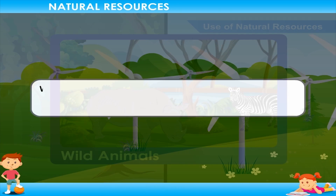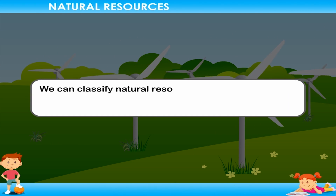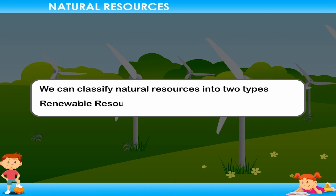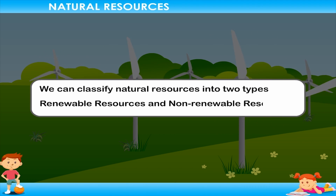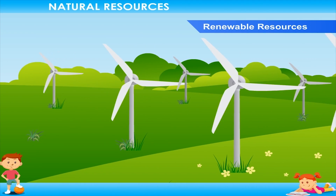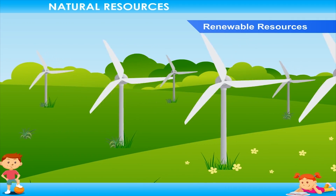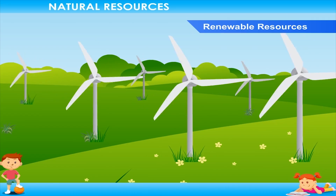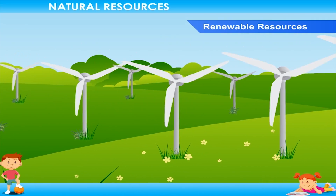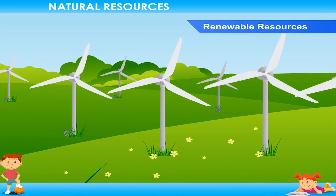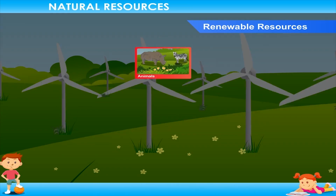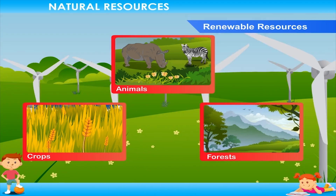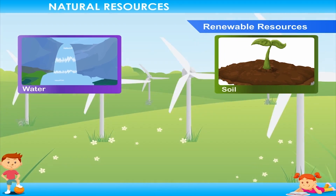We can classify natural resources into two types: renewable resources and non-renewable resources. Renewable resources are sources that can be used again. If managed wisely, they can be replaced. Living things like animals, crops and forests are renewable resources, as are water, soil, air and sun.